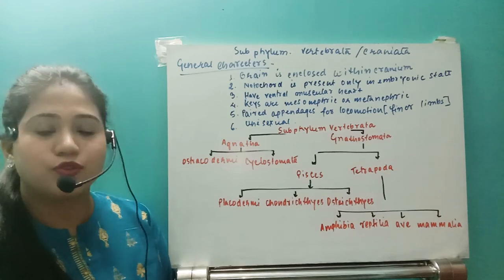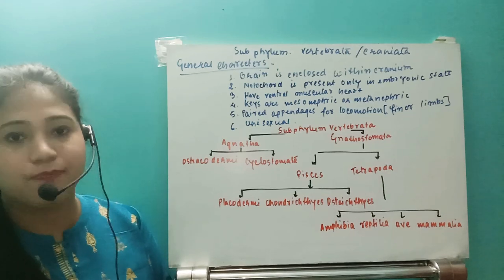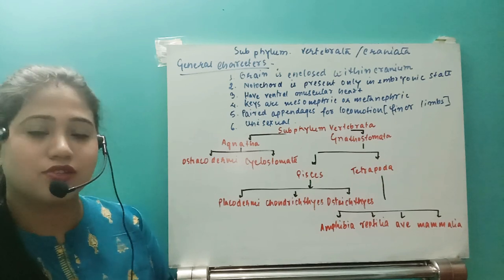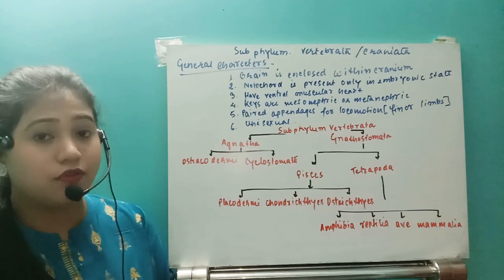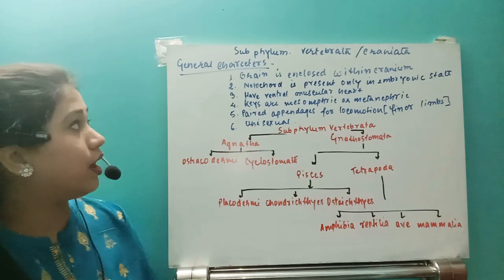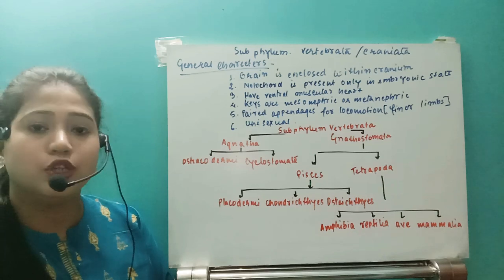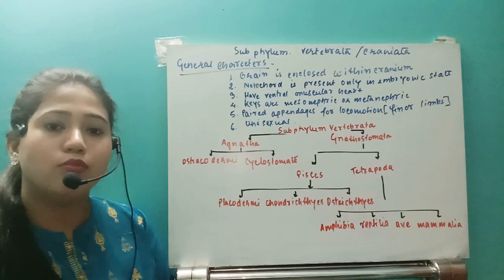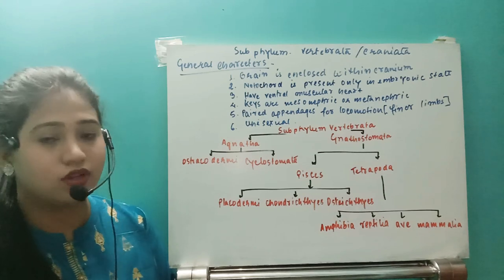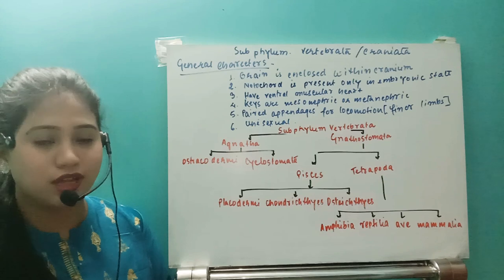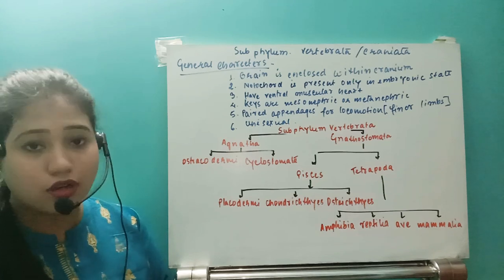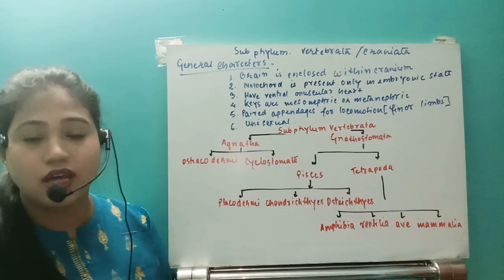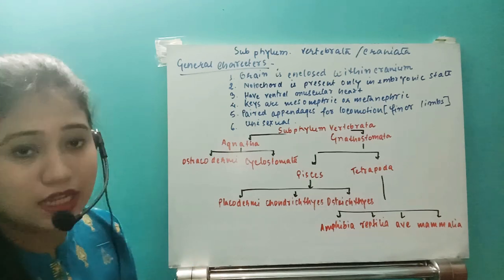Hello students, today we are going to start the next part. In the earlier part we started the last phylum, that is Chordata. Under Chordata there were three subphyla: Urochordata, Cephalochordata, and Vertebrata. Urochordata and Cephalochordata are known together as Protochordata. The third subphylum is Vertebrata, also known as Craniata.